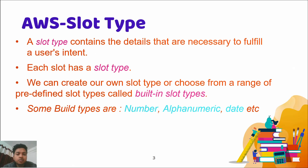Another thing is each slot has a slot type. In the previous video we discussed about the slot, and the same thing is here — each slot has a slot type. Right now we have only two types of slot type: firstly custom, and another is like a built-in, like a predefined slot type. Some built-in predefined types include number, alphabet, and dates.